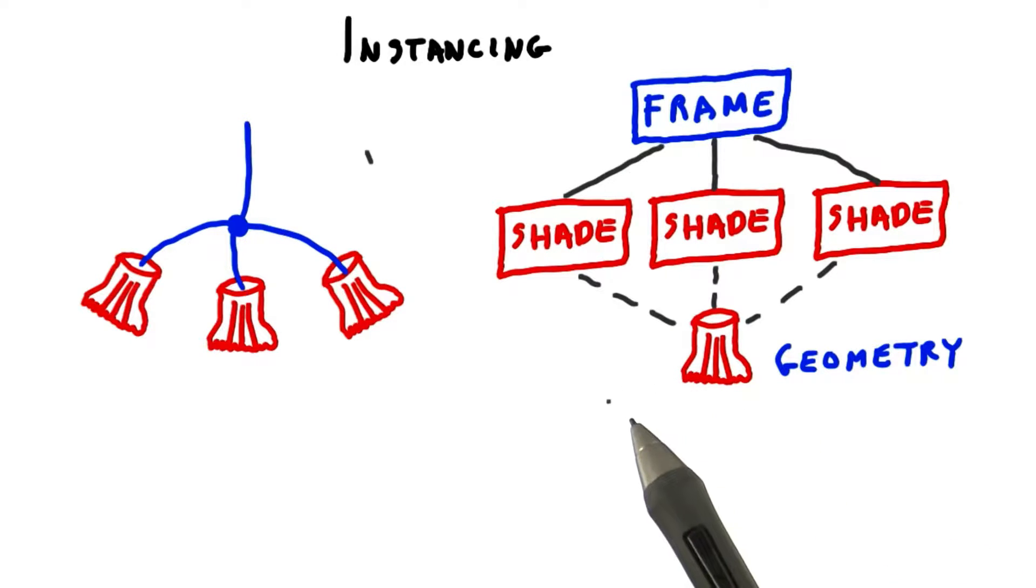In THREE.js, a mesh of triangles is called its geometry, though you'll often hear it called the object's mesh. A mesh in THREE.js is a type of object.